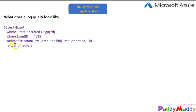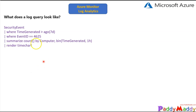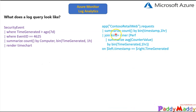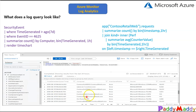Now let's understand what a query looks like. This is a simple query written in KQL about security events — it filters by 'TimeGenerated ago' of around seven days, with EventID equal to 4625, and you can get a summarized count by computer with the timestamp generated in the last one hour, rendered as a time chart. For more complex queries, you can also perform left join and right join operations across tables.